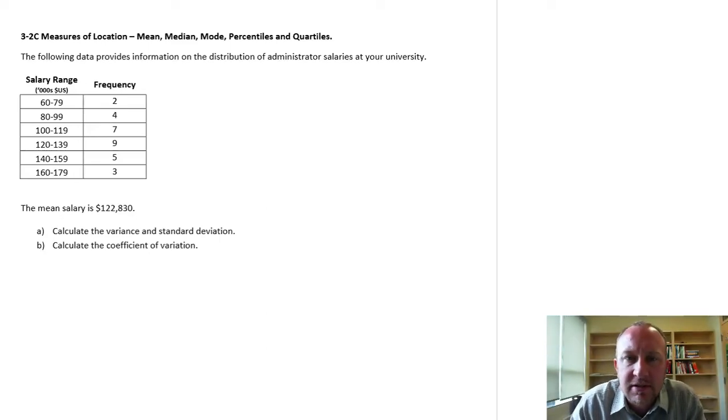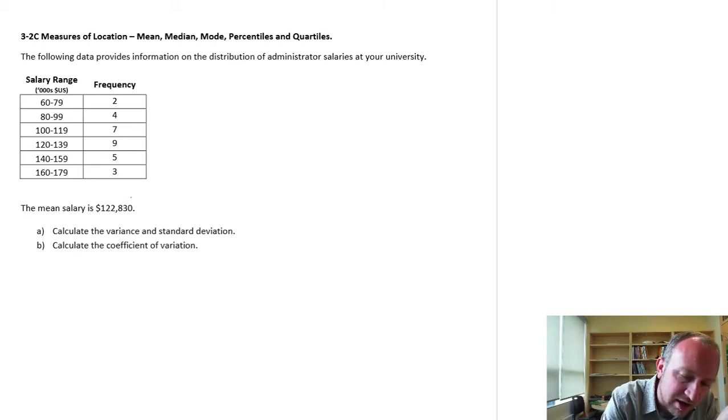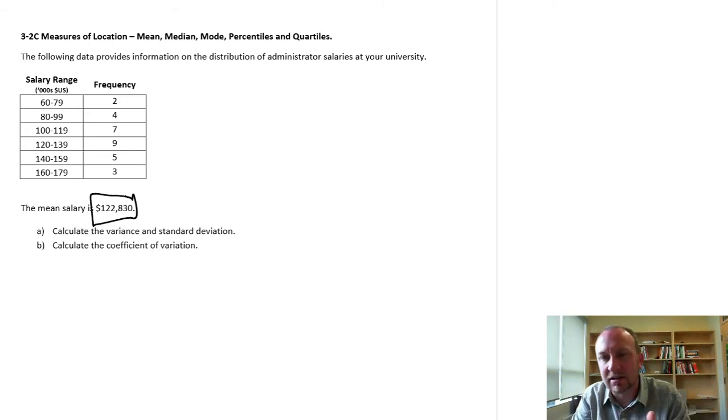Hello again. So in this exercise, we're working with what is called grouped data again. We don't have the raw data, we don't have the data set itself, but rather we have the frequency distribution of the data. Now we've done one exercise with this data set, or sorry, with this frequency distribution, where we estimated the mean, and so here we have that mean value, calculated in a previous video, for a previous exercise of $122,830.